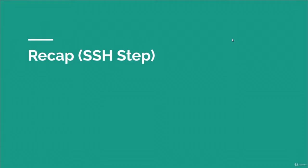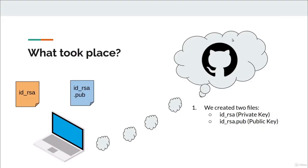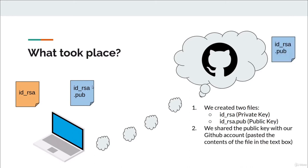To recap what we just did: we generated two keys — an id_rsa private key and an id_rsa public key. The public key is what we share with GitHub, and that's what we pasted into the key section, so that our computer can communicate with GitHub in a secure and authenticated fashion.